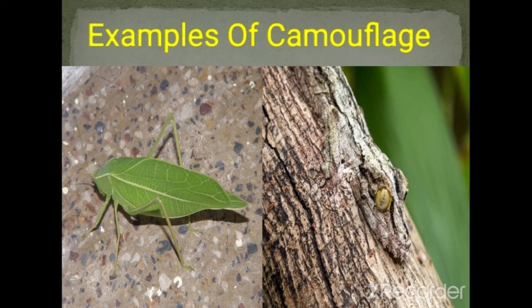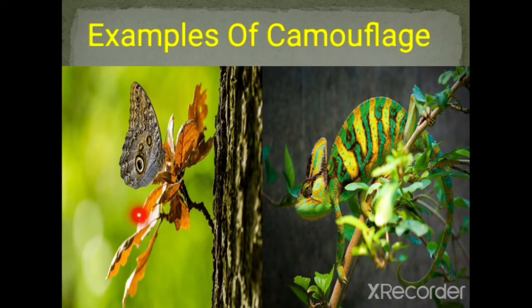Some examples of camouflage: an insect that looks exactly like a leaf, a lizard that resembles the stem of a tree, and some butterflies that have an eye-like pattern on their wings to frighten predators. The chameleon is the master of disguise among animals because it can change its color very quickly to blend with its surroundings.